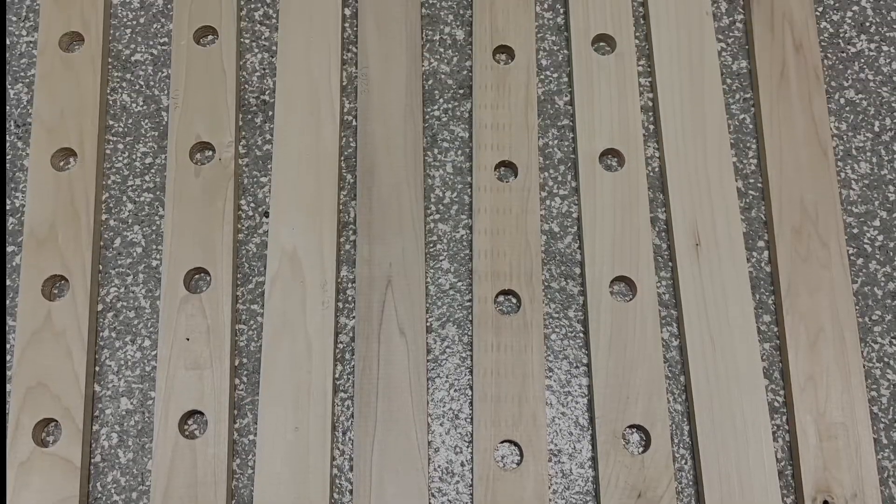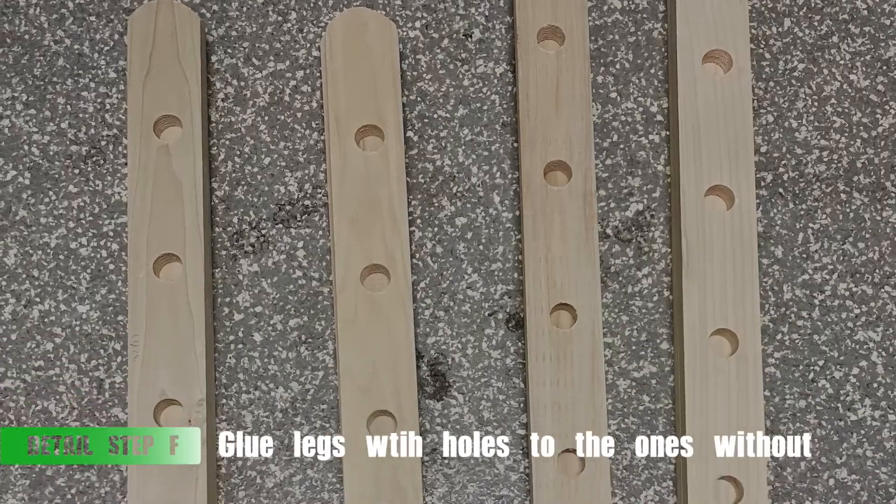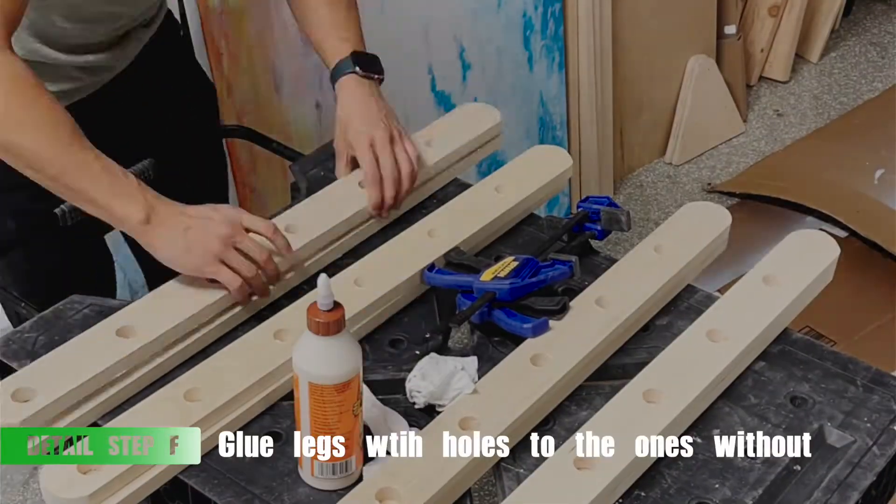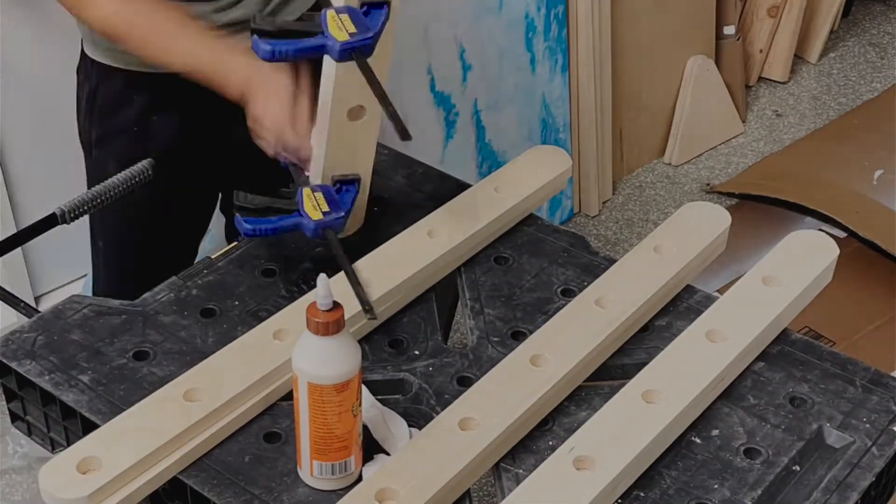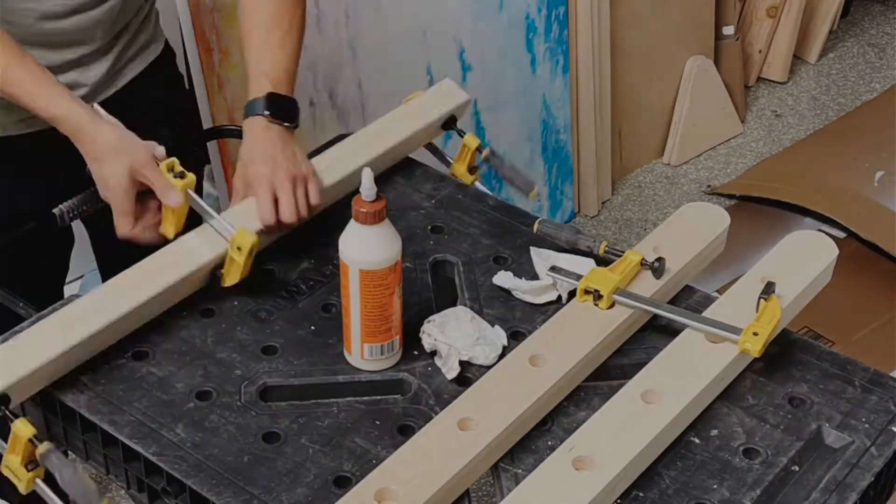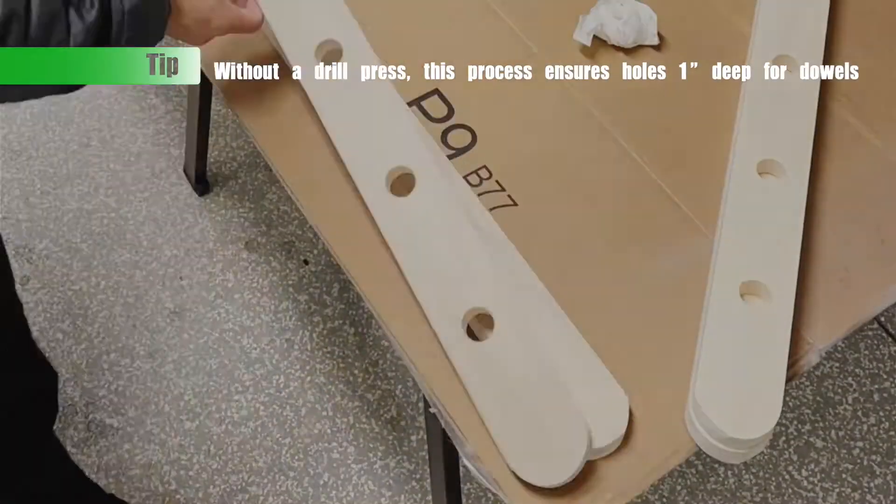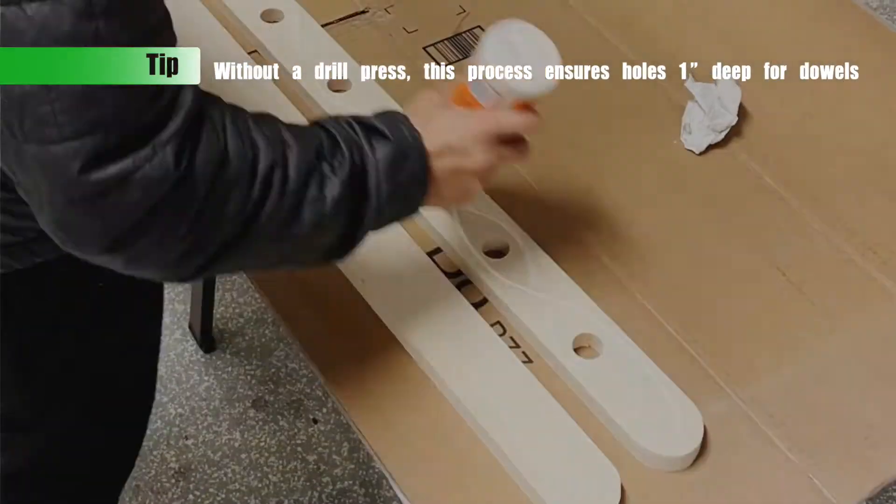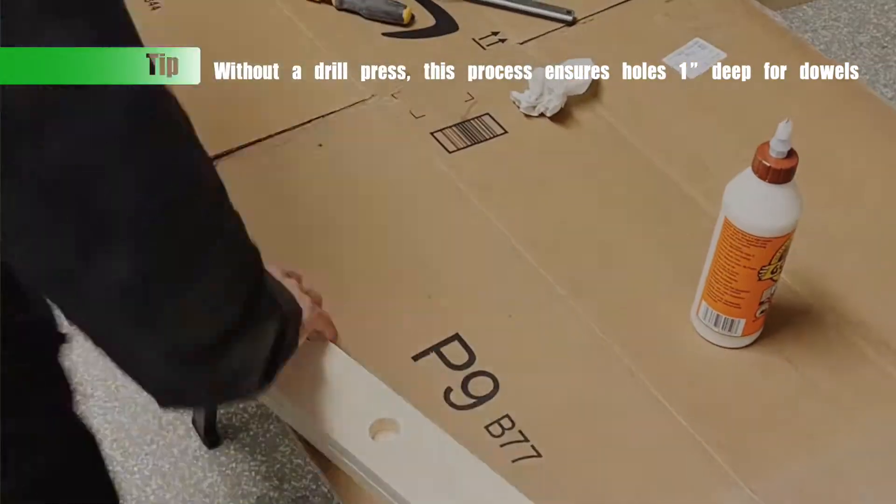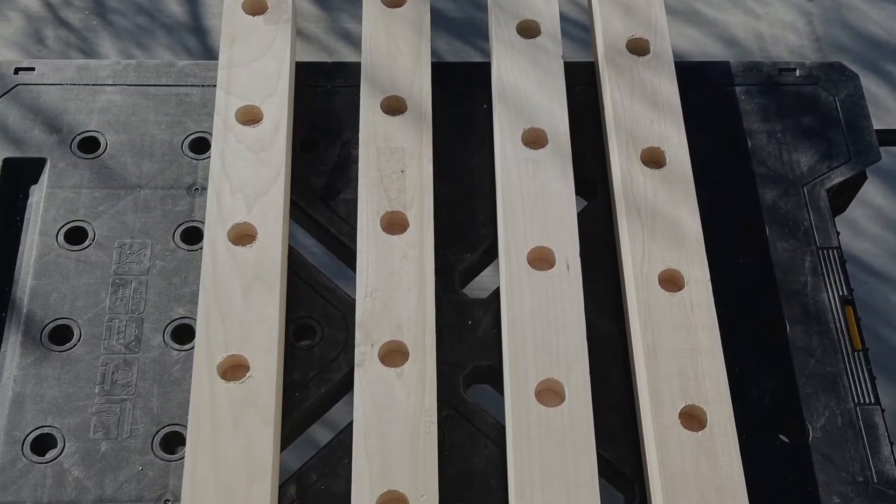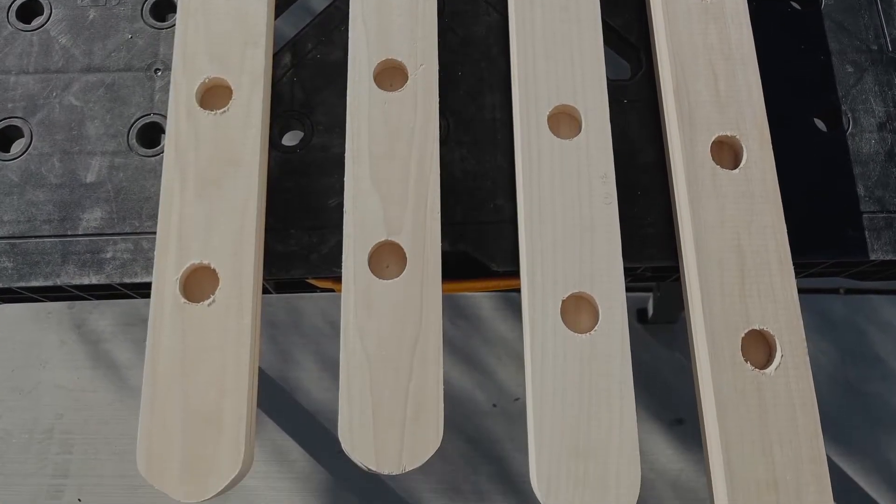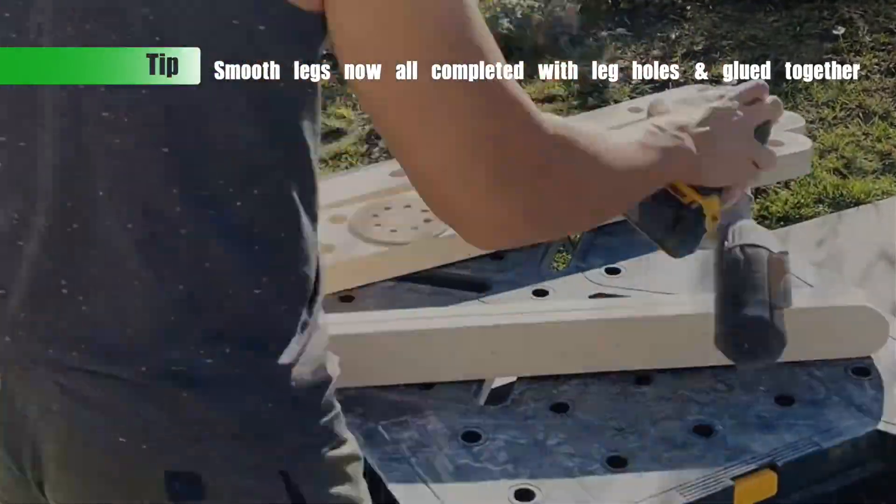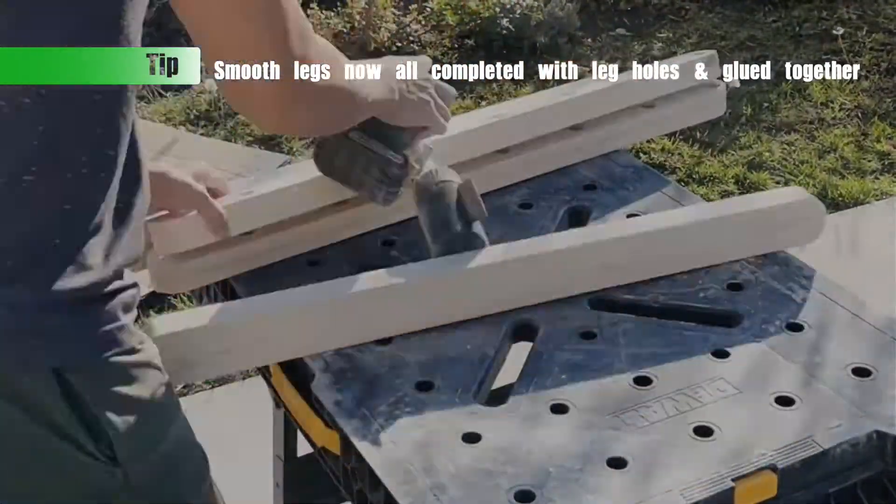After making the 1 inch holes for the dowels, you're going to take those pieces and glue them together. As you can see here, I took one leg that had holes in it and one without and then basically just glued them together with wood glue. Again, with this process, I didn't need to use a 2 by 3 and then estimate the depth of my holes. I just had a 1 by 3 and made holes all the way through. And here it is, your two short rails and your two long rails. Just a quick tip here, after gluing the rails together, I just used an orbital sander to just smooth out the edges.